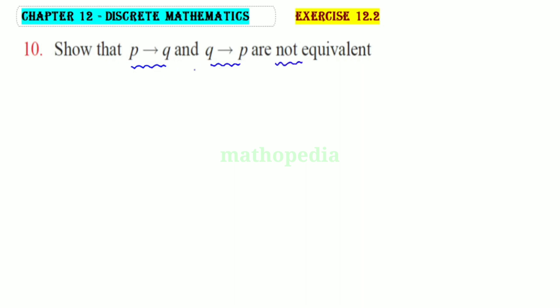So we will prove that p and q are not equivalent. p and q are the end statements. We will write the truth table — 2 power 2 equals 4 rows.